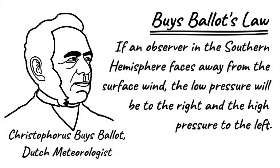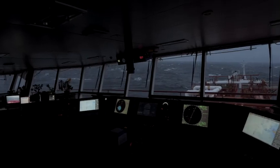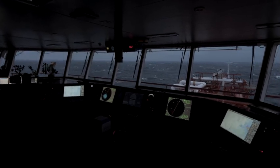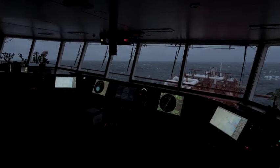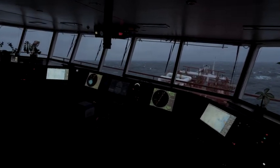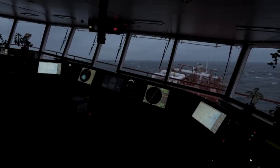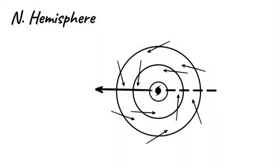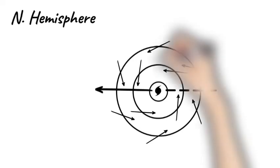In the Southern Hemisphere, of course, it's the exact opposite. The second step, if the ship is within the storm's circulation area, is to determine the ship's location relative to the storm center. For the purpose of storm avoidance, instructions for steering the ship to safer waters are based on four locations.